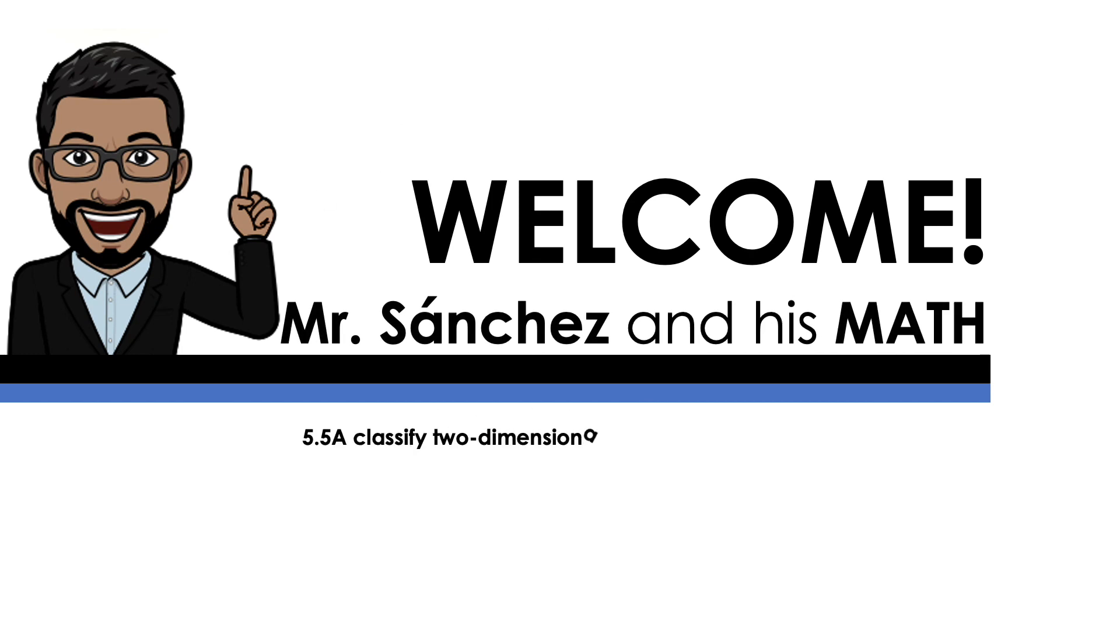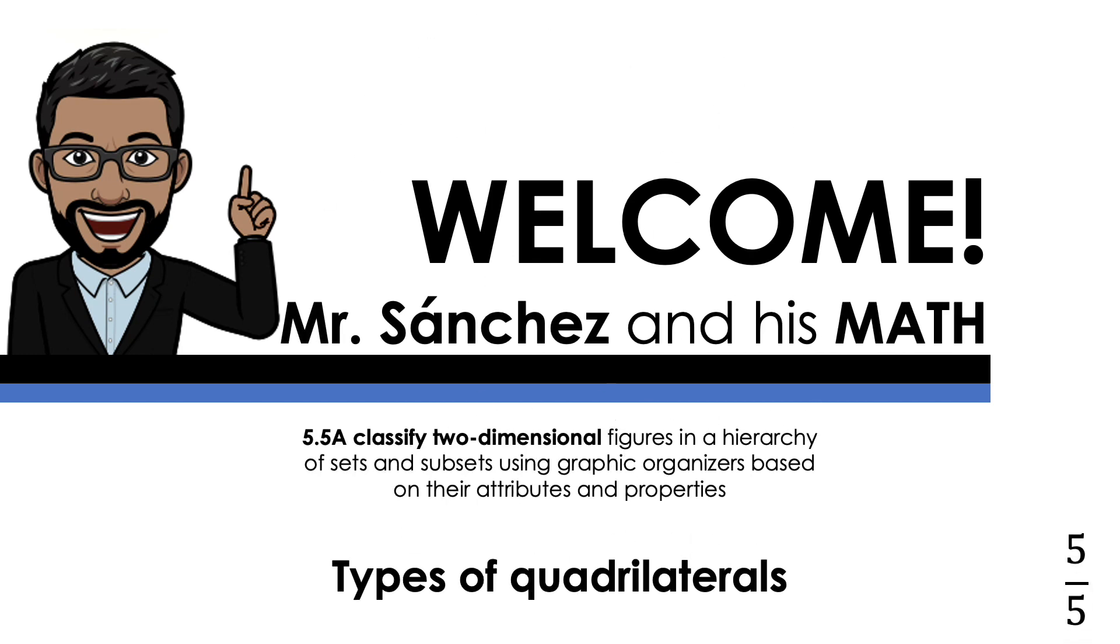Welcome to Mr. Sanchez and his math. Today we're going to be talking about TEKS 5.5A, classifying two-dimensional figures. Specifically, we're going to be talking about the types of quadrilaterals. This is lesson 5 out of 5, the last one of this TEKS.